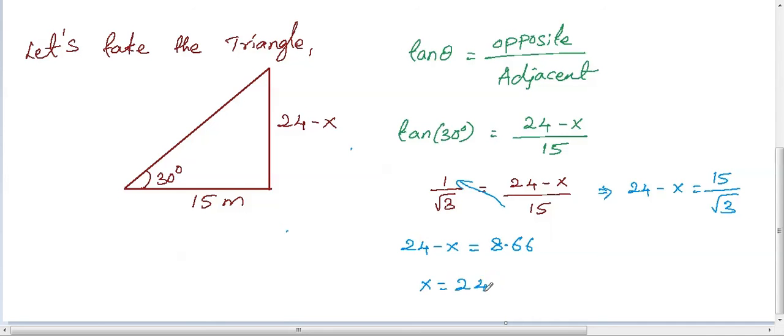So, x is equal to 24 minus 8.66 which is 15.34 meters.